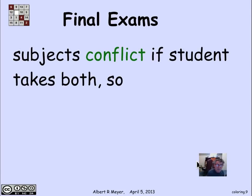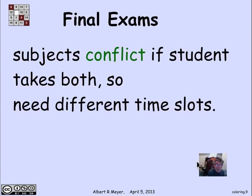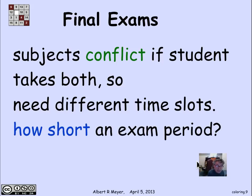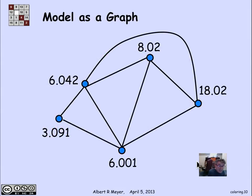Another example of this kind of conflict problem is scheduling final exams. Two subjects conflict if a student is taking both, because then the final exams can't be at the same time. We need to assign different time slots to subjects that have a student in common. The question is, given this data about which pairs of subjects share a student, how short an exam period can we get away with? It becomes a simple graph model and a coloring problem.